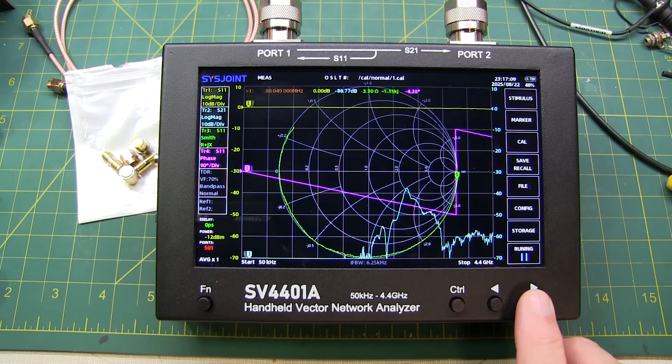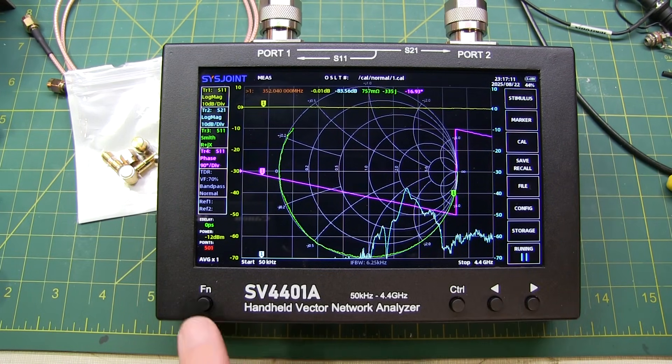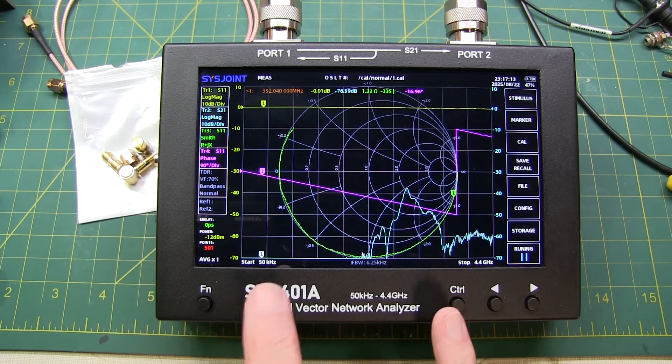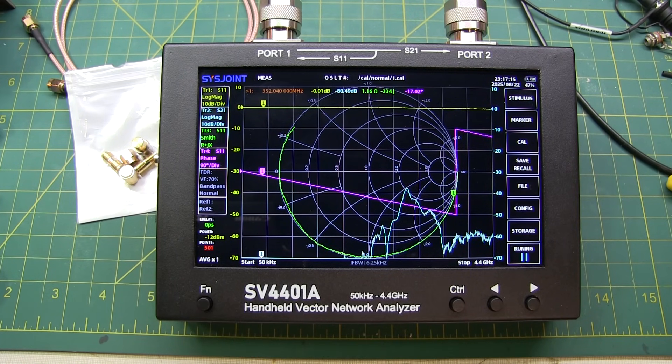Now, the arrow keys, again, move markers back and forth. The function and control keys have got some additional functionality with the markers that maybe we'll cover in a future video.